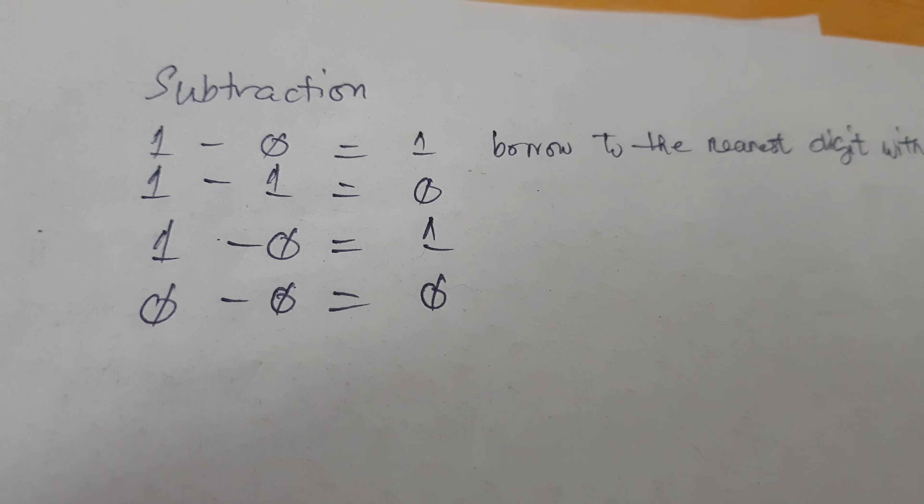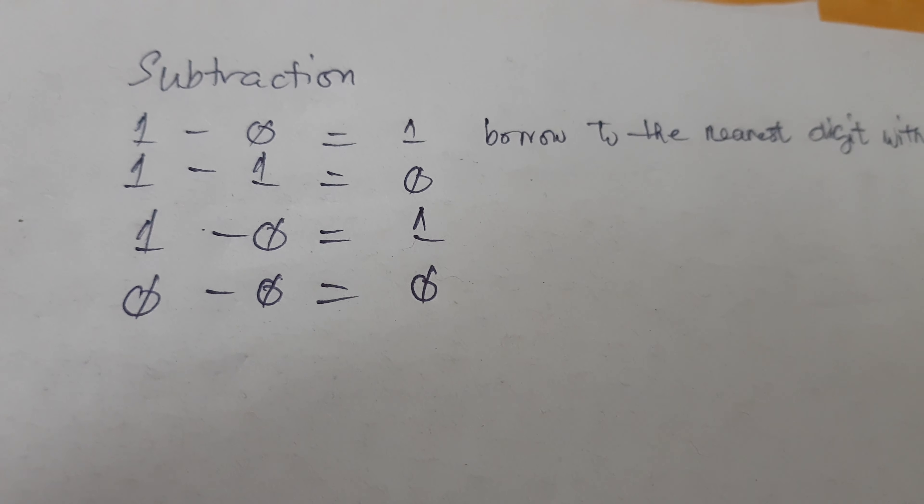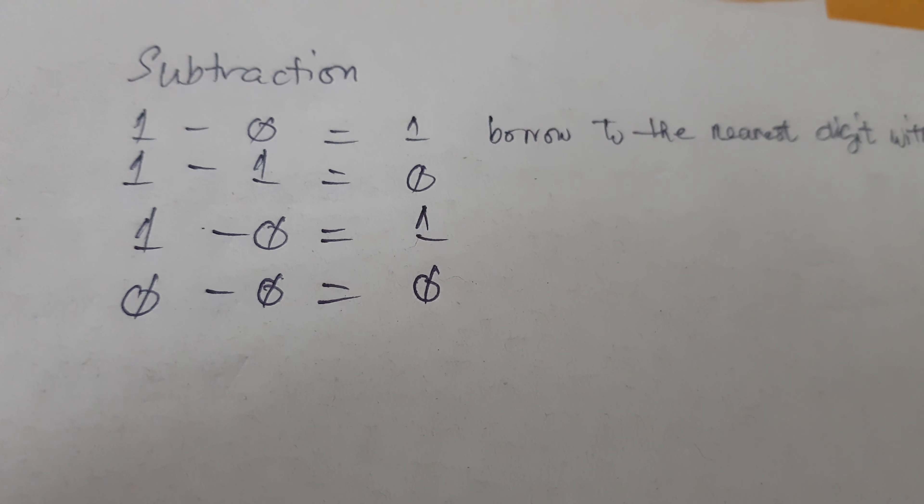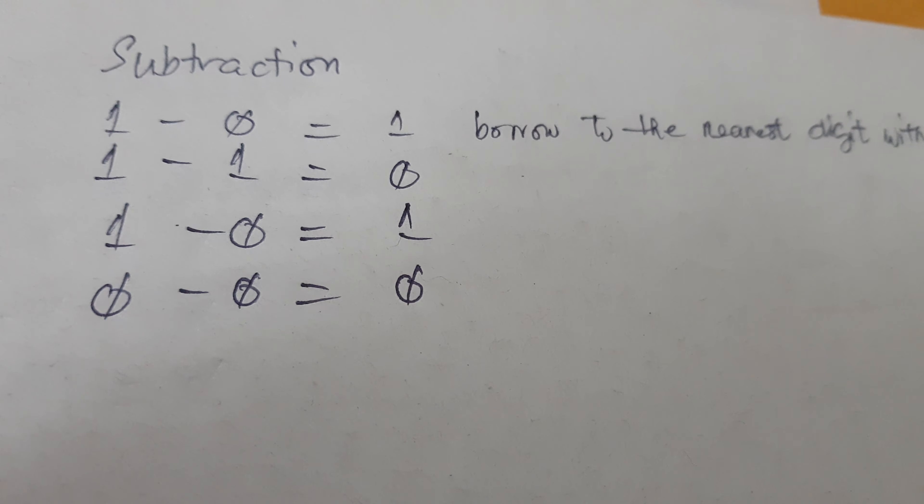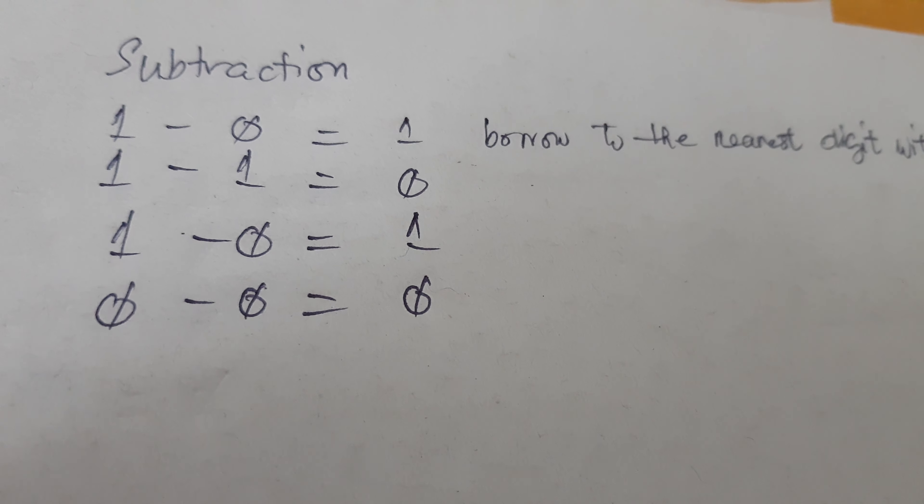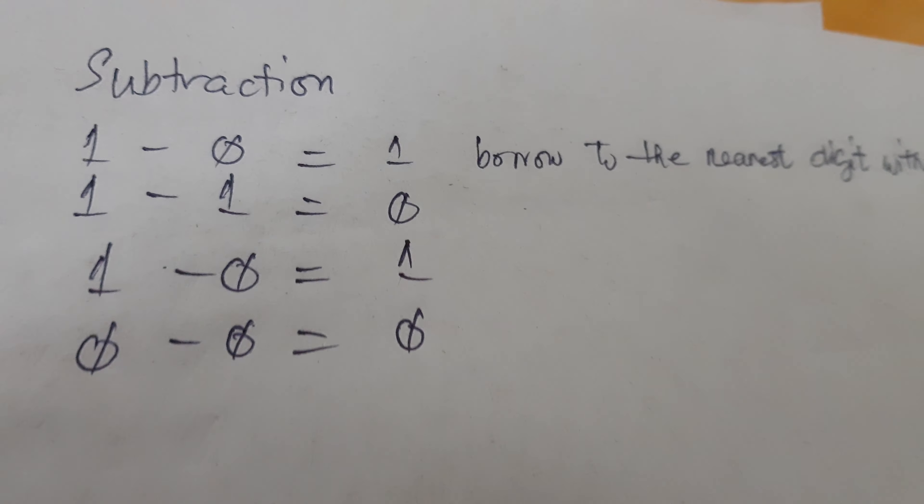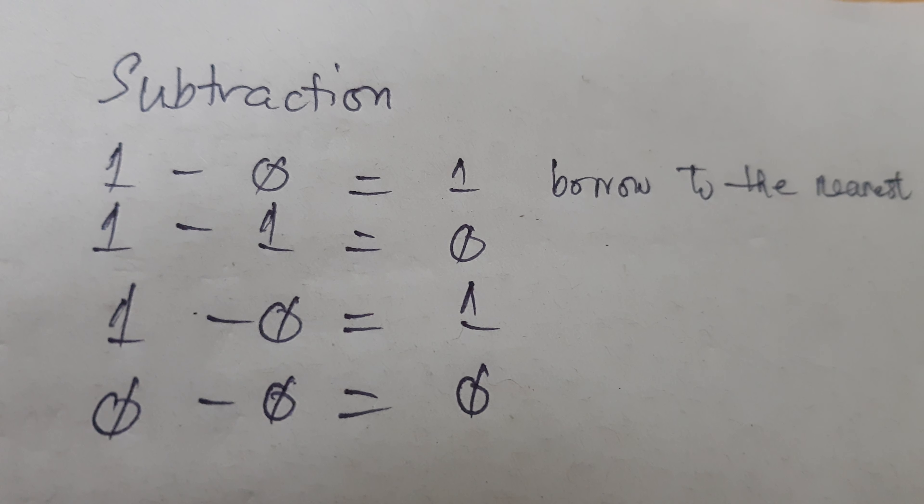Okay, so in this tutorial we're going to learn how to subtract binary numbers. First, we're going to know the rules. We have four rules in subtraction of binary numbers. First is that one minus zero is equals to one.